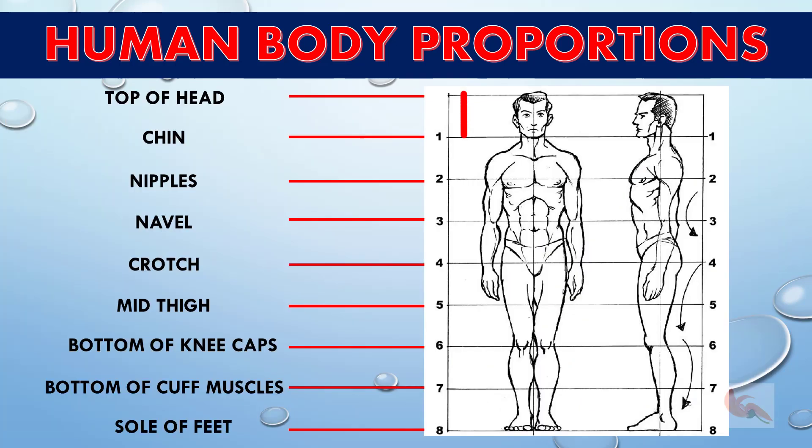From the top of the head to chin is 1 head unit, chin to nipples and then nipples to navel and navel to crotch are 1 unit each. Crotch to mid thigh is 1 unit and then 1 unit to bottom of the kneecaps. Thereafter 1 unit to bottom of the calf muscles and last one to sole of the feet.